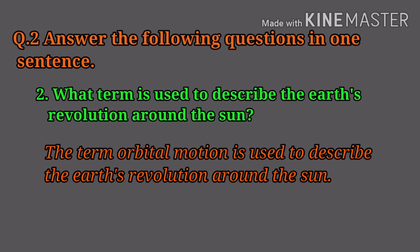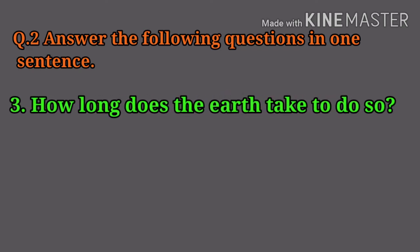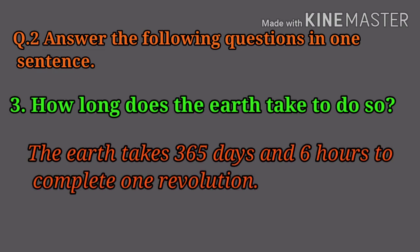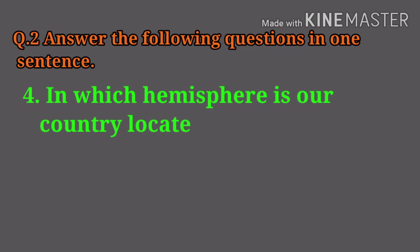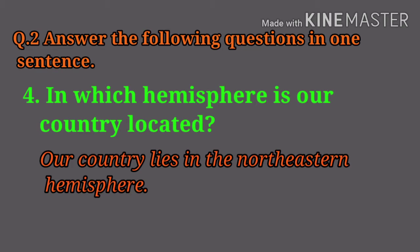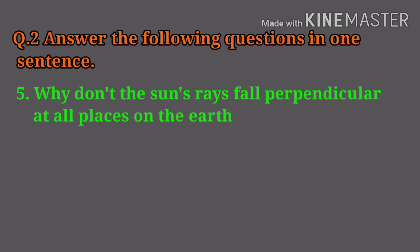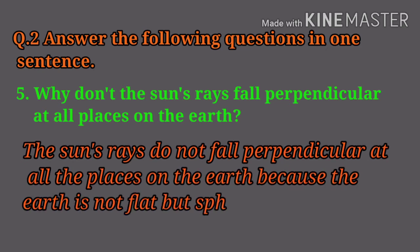How long does the earth take to do so? The earth takes 365 days and six hours to complete one revolution. In which hemisphere is our country located? Our country lies in the northeastern hemisphere. Why don't the sun's rays fall perpendicular at all places on the earth?